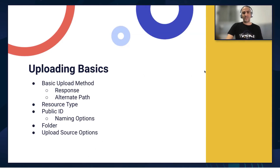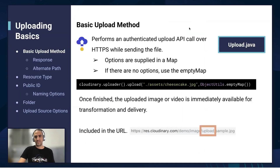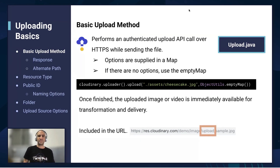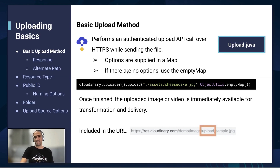Next, we're going to talk about uploading basics. We're going to show you how to upload your assets to Cloudinary's cloud. For this exercise, we're going to use the upload.java module. The upload performs an authenticated API call to the Cloudinary service. There are two ways to do it, but here we're going to show the API because the SDK is what we're talking about.